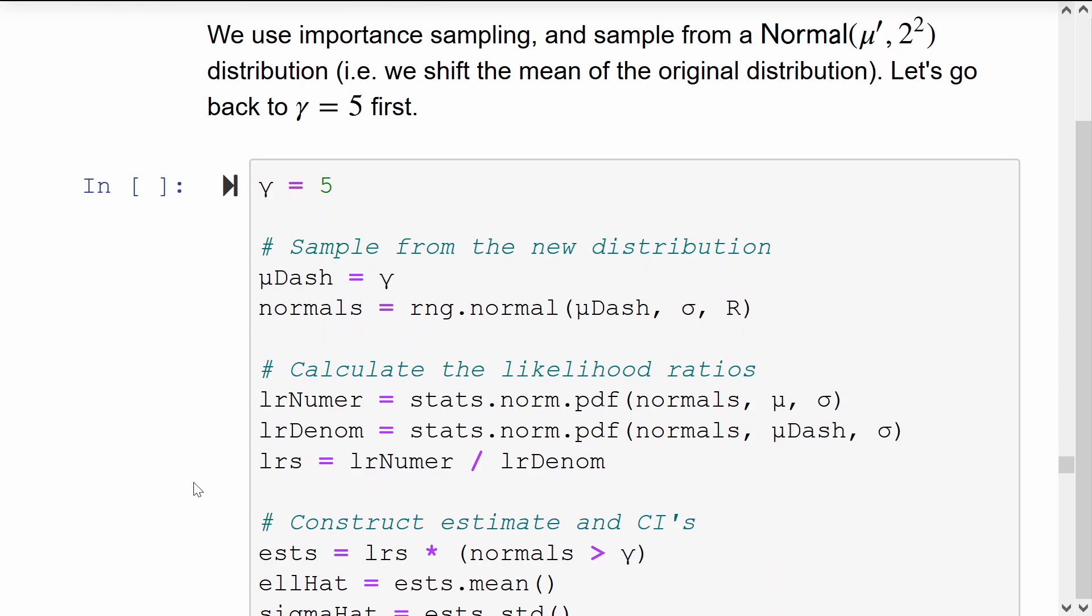So we use importance sampling and we'll sample from a different distribution, a distribution where our event of interest is more likely to occur. We'll take samples from a normal distribution with the same variance, but we'll increase the mean. Going back to our simpler problem of estimating the probability of our normal exceeding the level 5, we'll use the proposal distribution which has a mean of 5 also.